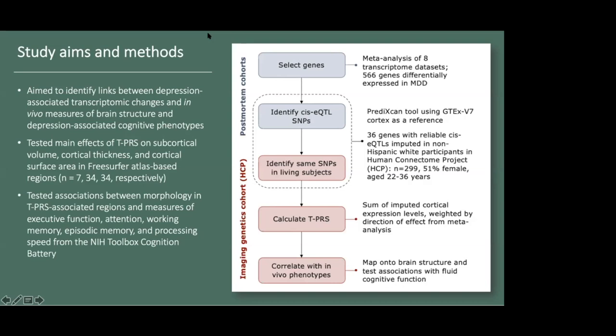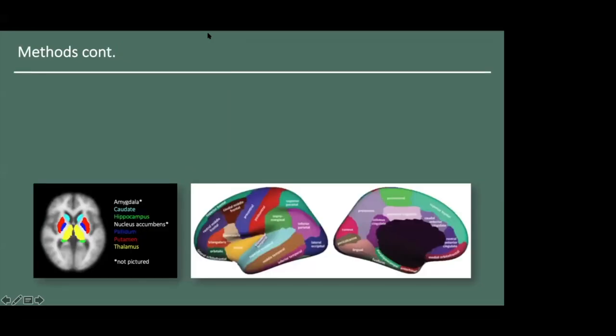In a follow-up analysis, we tested associations between volume, thickness, or surface area in TPRS-associated regions and measures of fluid cognition, including executive function, attention, working memory, episodic memory, and processing speed. These were assessed with the NIH Toolbox Cognition Battery. We selected these particular measures for consideration because deficits therein have been reported in depression and because variation therein has been reported in healthy controls.